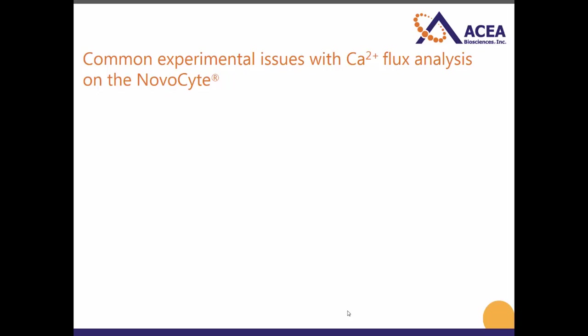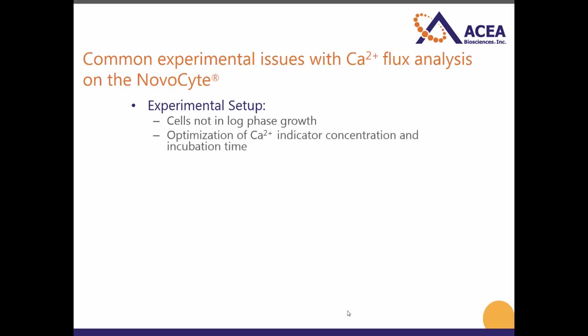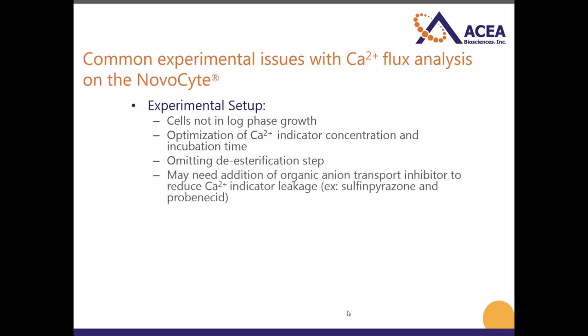Finally, I want to just overview a couple of the common experimental issues that people encounter when running calcium flux experiments on the flow cytometer and on the NovaCyte in particular. This can be due to issues with experimental setup, such as the cells not being in the logarithmic growth phase. This can result in a small or absent response to the calcium flux stimulant. Secondly, it may be necessary to optimize the calcium indicator dye concentration and incubation time that's used. Another issue can arise from omitting the de-esterification step, resulting in too high of a baseline fluorescence. It may also be necessary to add an organic anion transport inhibitor which reduces the calcium indicator leakage, such as the commonly used probenecid.